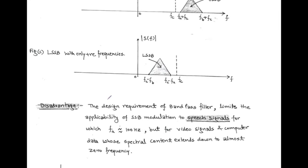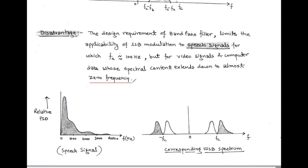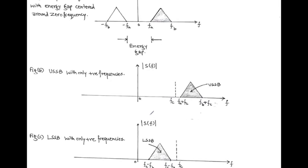In the case of the speech signal, the bandpass filter operates satisfactorily, but it has a disadvantage. The design requirement of the bandpass filter is limited to speech signals having a lowest frequency component of approximately 100 Hz. For video signals and computer data, which have almost zero energy gap, the single sideband modulation technique cannot be used. The speech signal has a relative power spectral density with a lowest frequency component of approximately 100 Hz and an energy gap of twice F_A, that is 200 Hz. The transition band of the bandpass filter is adjusted within this energy gap to obtain the desired sideband, whether upper or lower single sideband.